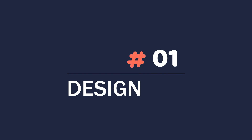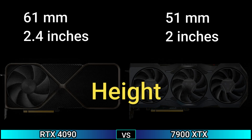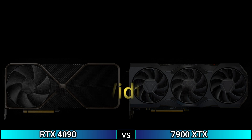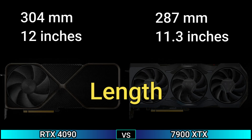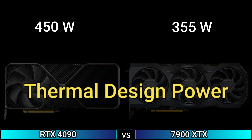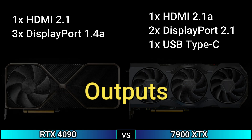First, design: triple slot and dual slot, height 2.4 inch and 2 inch, wide 5.4 inch and 4.3 inch, length 12 inch and 11.3 inch, thermal design power 450W and 355W, suggested PSU 850W and 750W, outputs: 1x HDMI 2.0, 3x DisplayPort 1.4a, and 1x HDMI 2.1a.